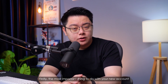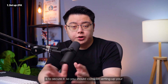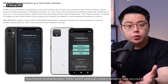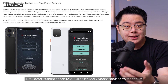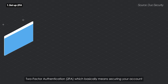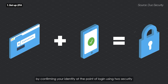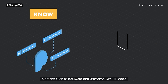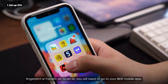Firstly, the most important thing to do with your new account is to secure it. You should consider setting up your two-factor authentication, 2FA, which basically means securing your account by confirming your identity at the point of login using two security elements such as password and username with pin code, fingerprint, or face ID. To do so, you will need to go to your IBKR mobile app.